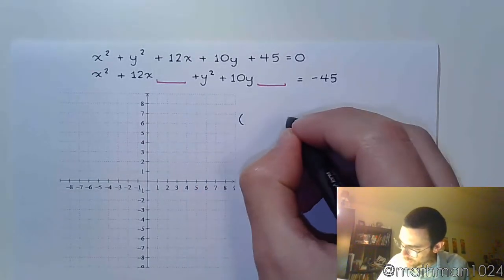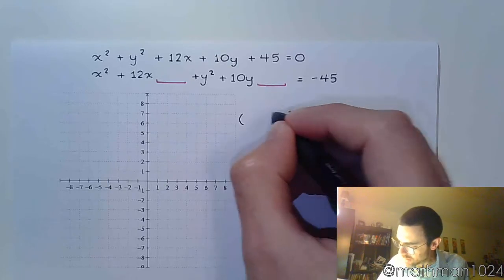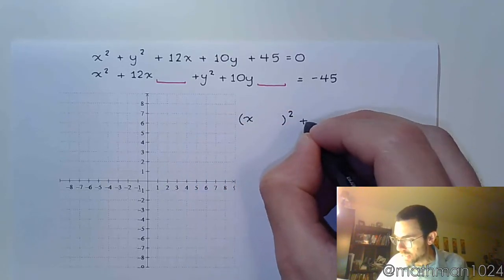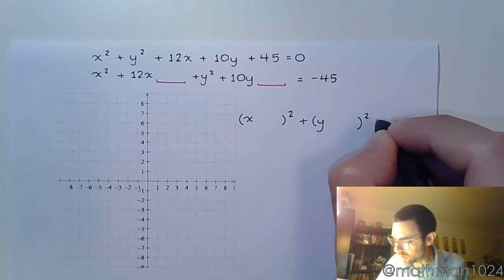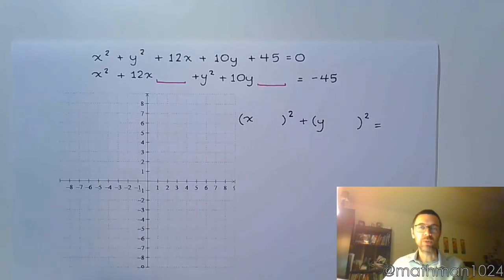So that means I'm expecting to have something that looks like x with a square. And I'm also going to complete the square for y. So it's going to be y something squared. And I'm going to have a number on the other side.